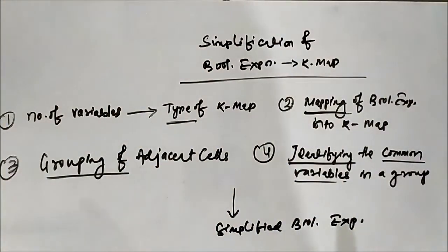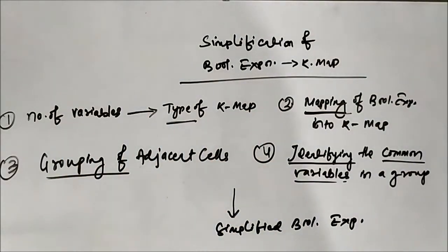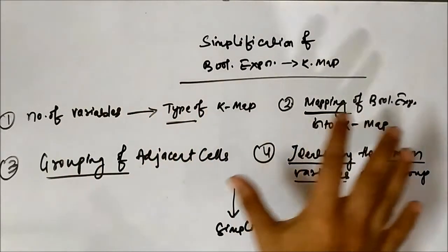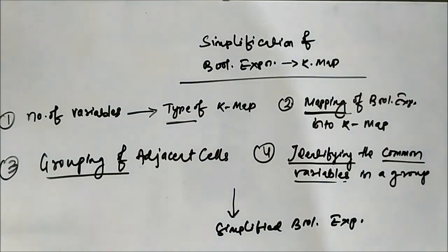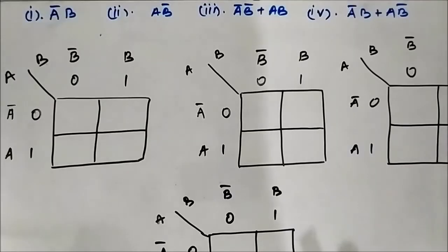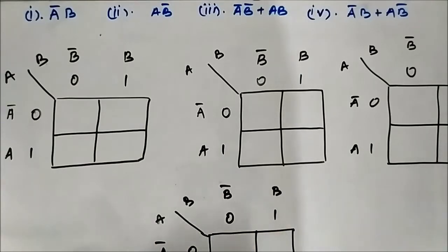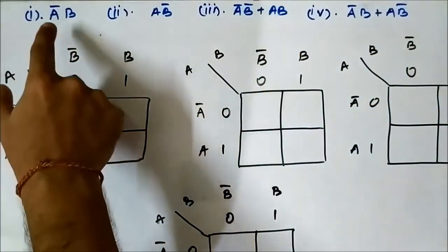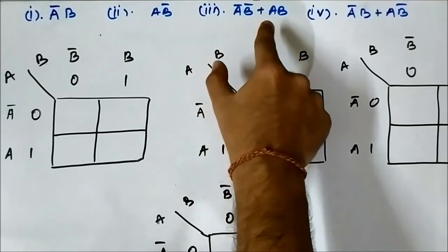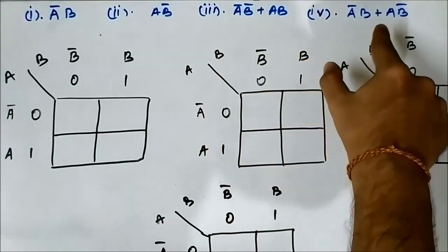So these are the four steps involved in the simplification of a boolean expression using KMAPs. In this video, we are going to discuss the mapping of boolean expressions into two, three, and four variable KMAPs. We will be mapping some expressions involving two variables into a two-variable KMAP first. The expressions are: A bar B, AB bar, A bar B bar plus AB, and A bar B plus AB bar.